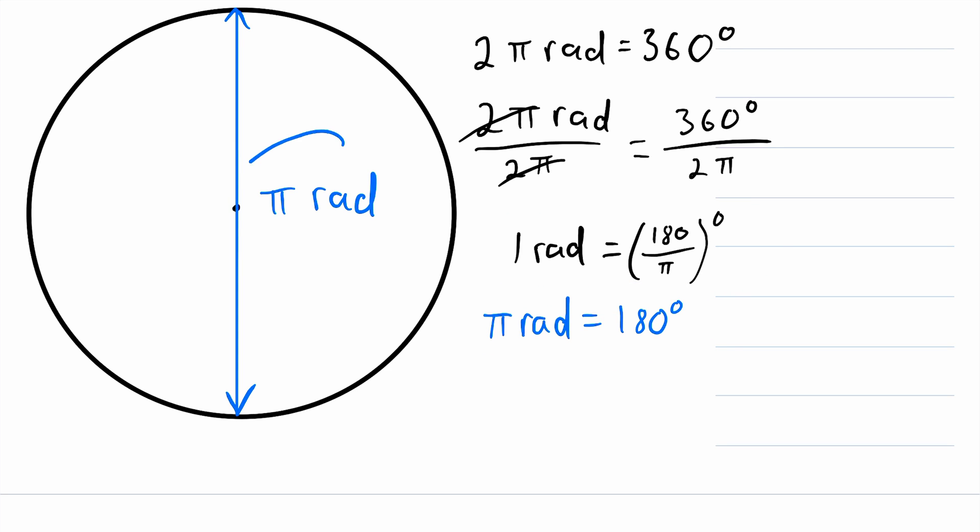And again, all we had to do to convert π radians into degrees is multiply both sides of this equation by π. On the left, we multiply by π, which gives us π times 1 radians. That's π radians. And then on the right, we multiply by π, which cancels out with that π in the denominator, leaving us with 180 degrees.